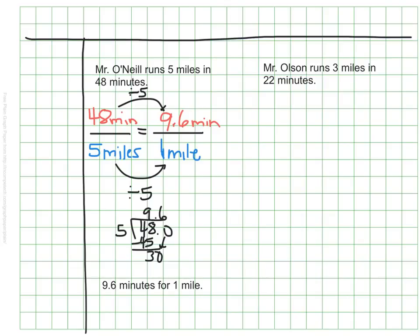We'll do the same thing for Mr. Olson, again finding the unit rate. So again, I'm going to use equivalent ratios that are set up as part-to-part that look like fractions. I know it takes him 22 minutes to run 3 miles. I want to know how long it will take him to run just one mile, so I have the denominator of my equivalent ratio as 1 for one mile. I can see again that I'm scaling down.